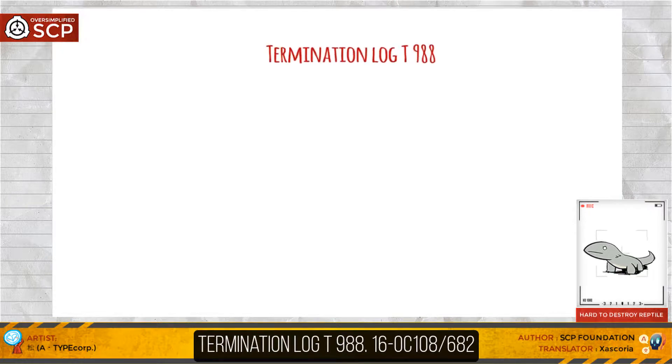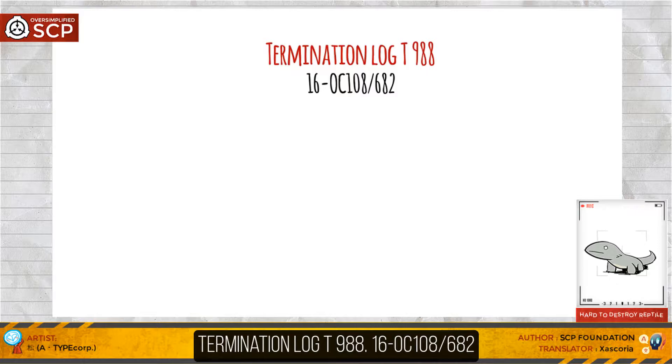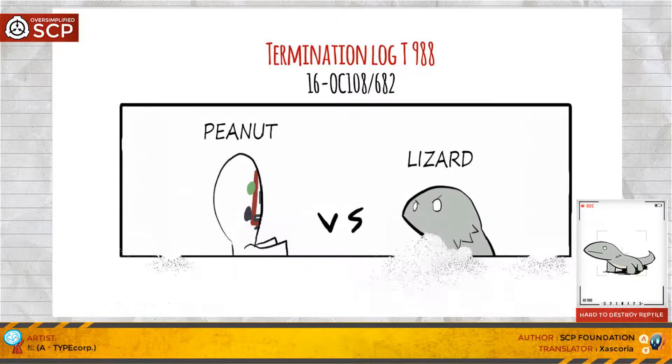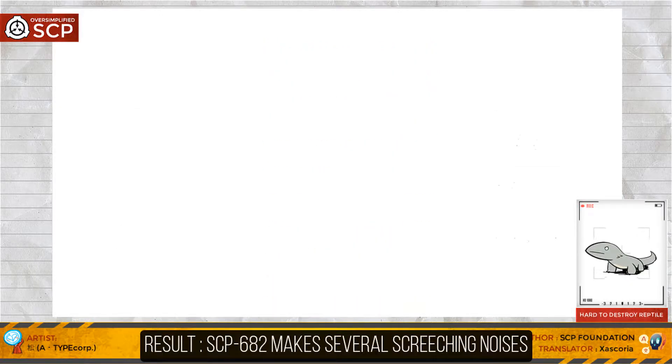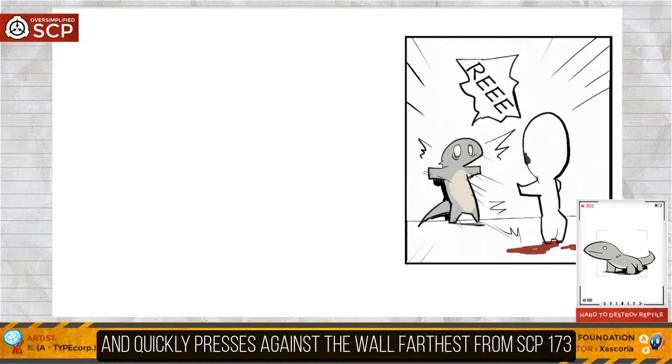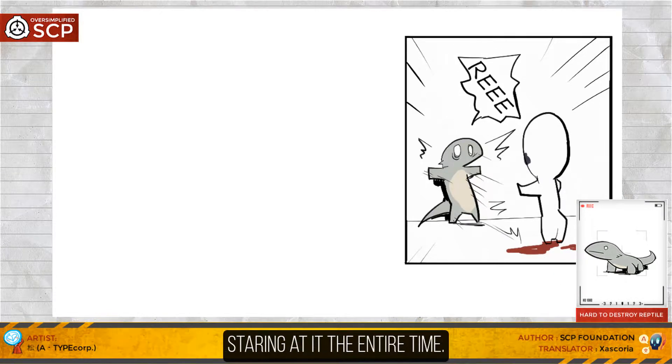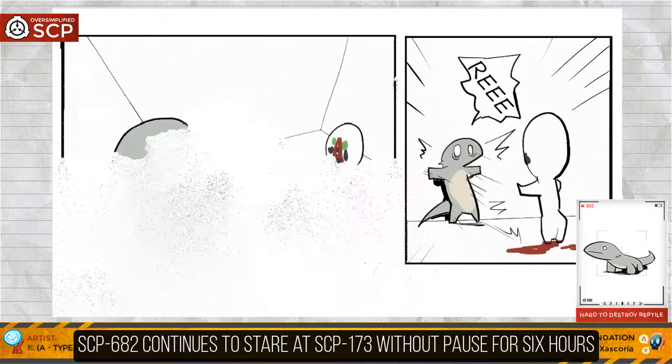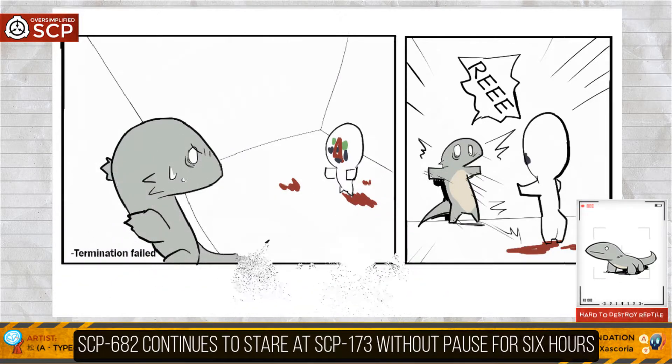Termination Log E-988-16-0-C-108-682. Item: SCP-173. Result: SCP-682 makes several screeching noises and quickly presses against the wall farthest from SCP-173, staring at it the entire time. SCP-682 continues to stare at SCP-173 without pause for 6 hours.